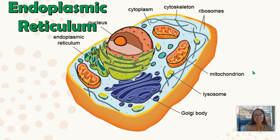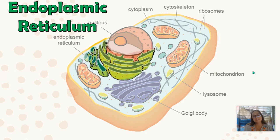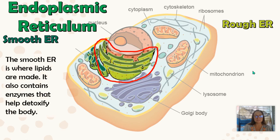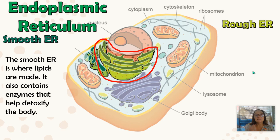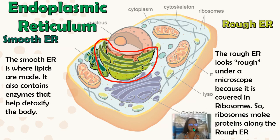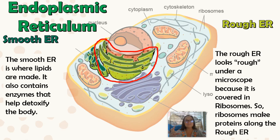Next we have the endoplasmic reticulum, or ER, and there are two kinds. We have the smooth ER and the rough ER. The smooth ER's job is to synthesize or make lipids — so phospholipids, cholesterol, and steroid hormones are all made in the smooth ER. The smooth ER also contains enzymes to help detoxify our bodies. The rough ER has ribosomes attached to it, making it also a site where proteins are produced.